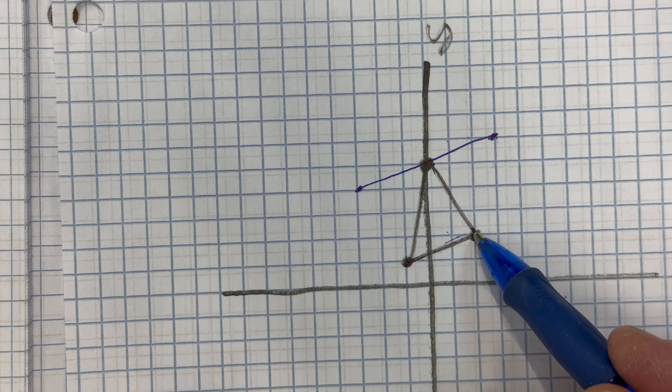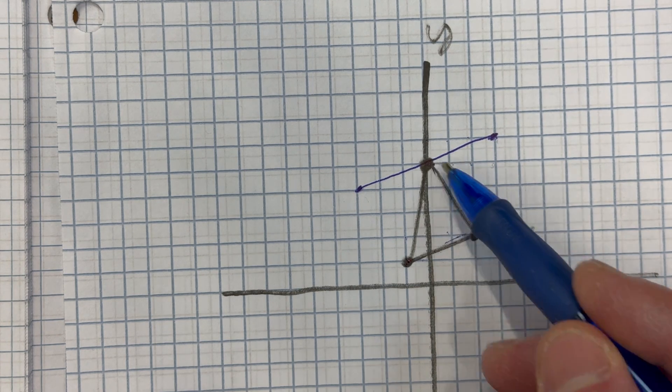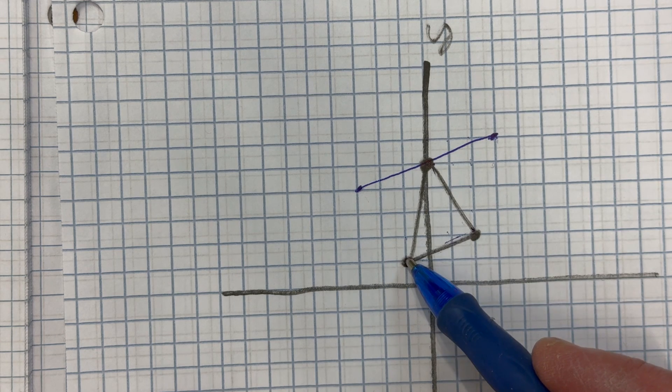So for example, if this slope here is, let's see, rise three, run negative two. So I went up three, left two. I repeat that same process.